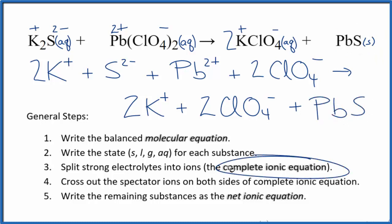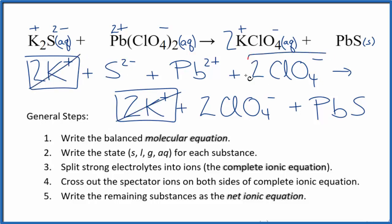This is the complete ionic equation. Now we can cross out spectator ions. They're on both sides of the complete ionic equation. So I have my reactants here and then my products. In my reactants I have two of these potassium ions. I also have that in the products. Those are spectator ions and we can cross those out. Two perchlorate ions here in the reactants and in the products, spectator ions which we cross out.